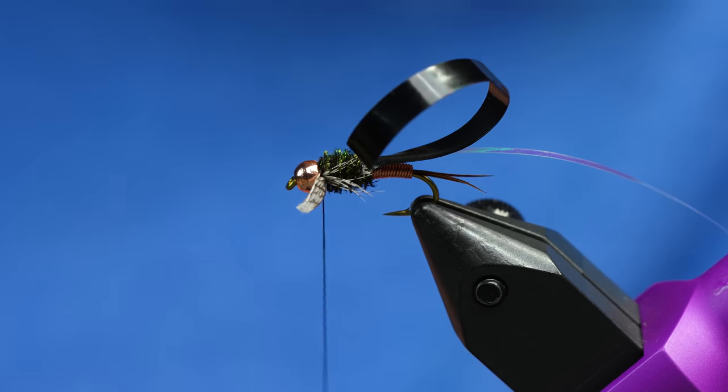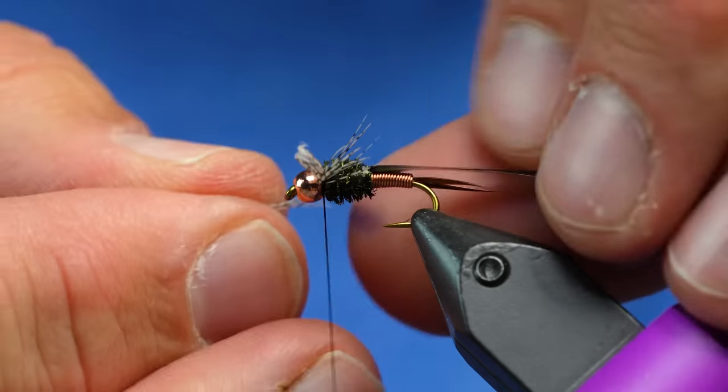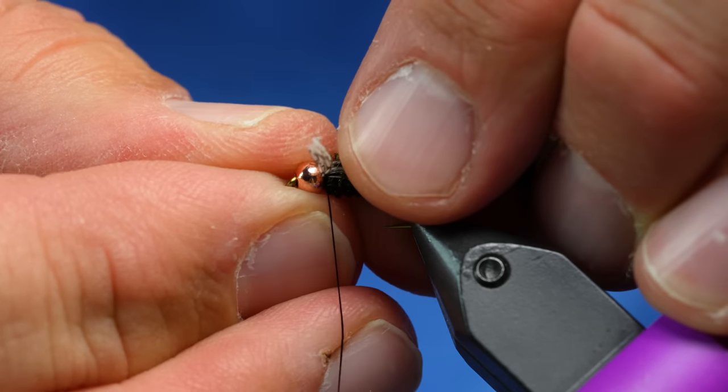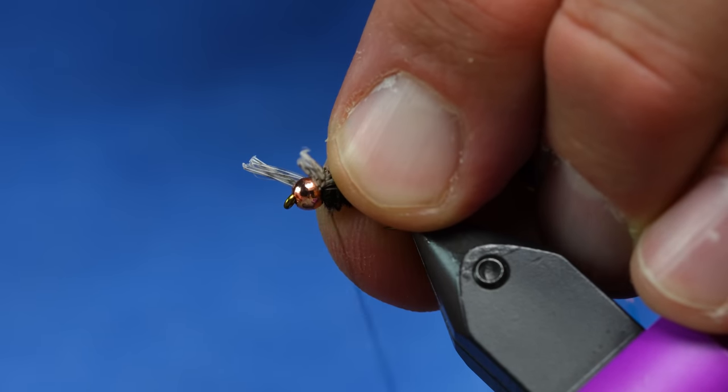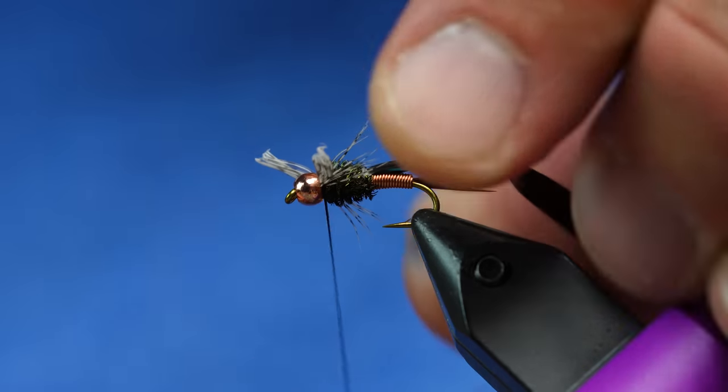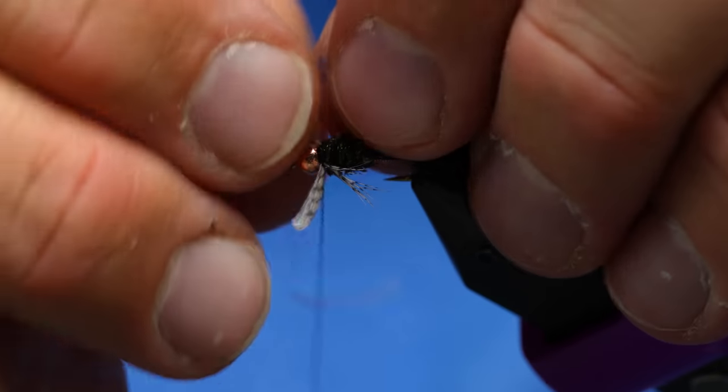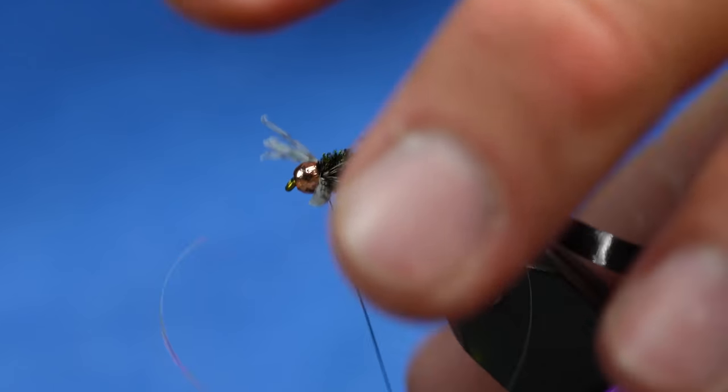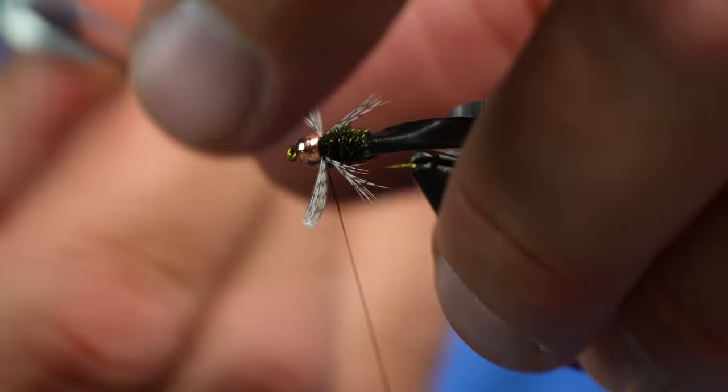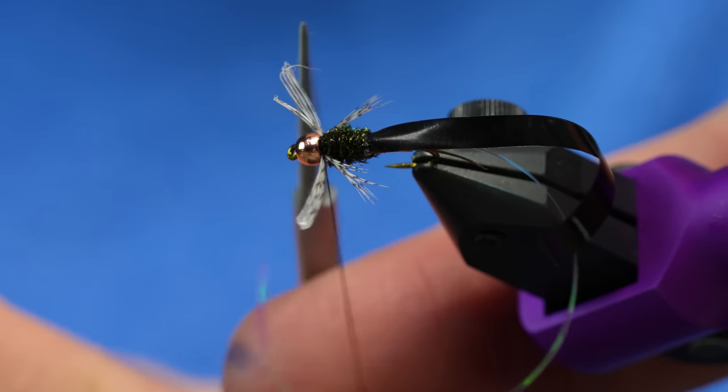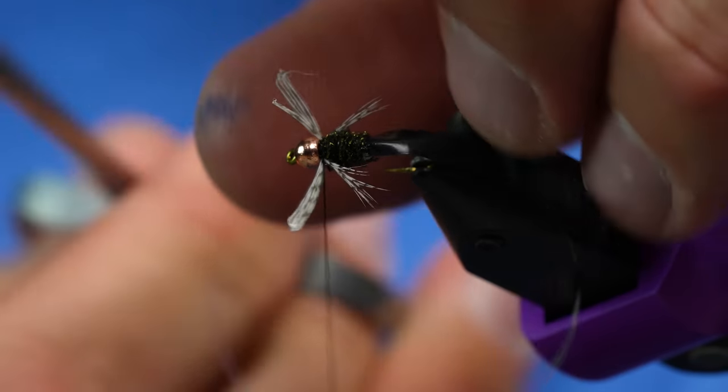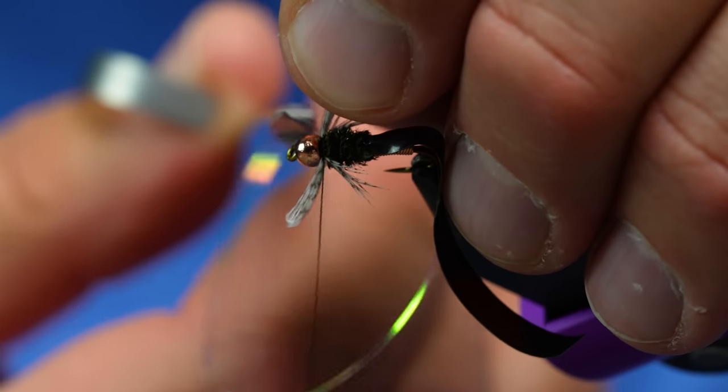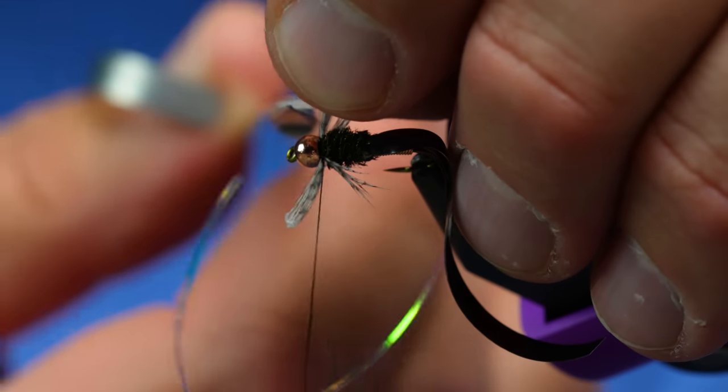All right, same thing on the other side. Just a small clump. I'm going to tie that one in. All right, now we're going to trim those off. And I really like these Renamed scissors because they're thin, you know, all around. You can really get in and trim well with those.